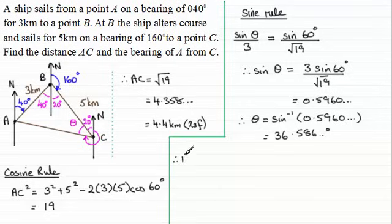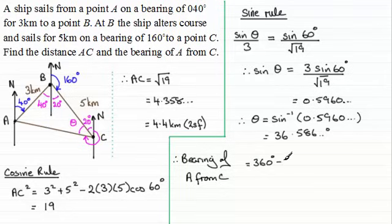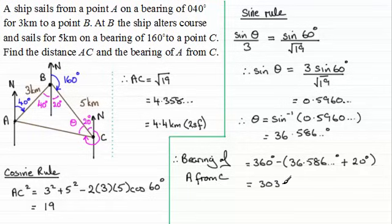Now we've got to get the bearing then of A from C. So I'll just write that in, the bearing of A from C. And to do that, that's this angle then around here, I just need to do 360 degrees and subtract from that angle theta which we've just seen is 36.586 and so on degrees and add that to the 20 degrees that we've got. Working this out you should find you end up with 303.41 and so on degrees. Now for bearing we normally give them as three figures so that bearing will be 303 degrees. What I'll do is I'll just say to the nearest degree.